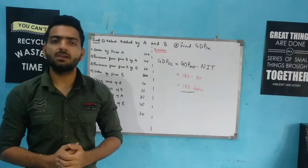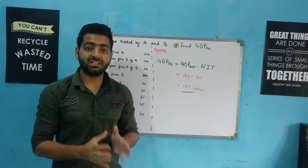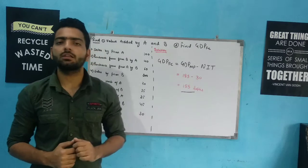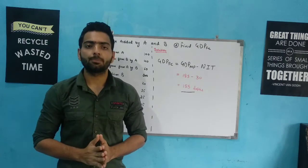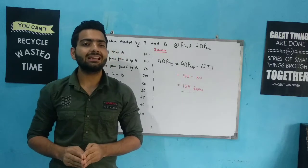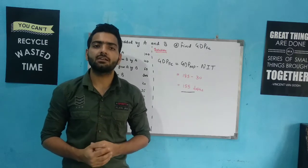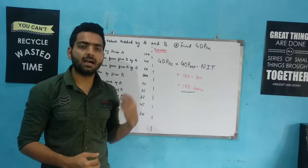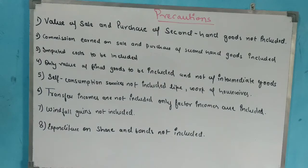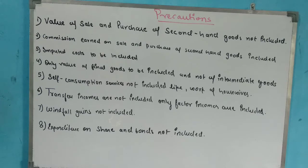I hope this method was clear. As we finish this chapter and the national income unit, let's discuss some important points — Precautions while calculating national income. There are three methods of national income, and while calculating using any of them — whether the value added method, expenditure method, or income method — we must keep these precautions in mind.